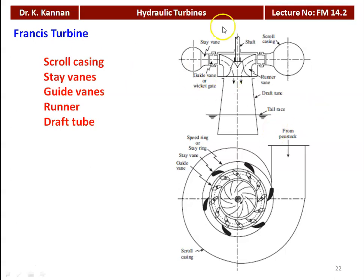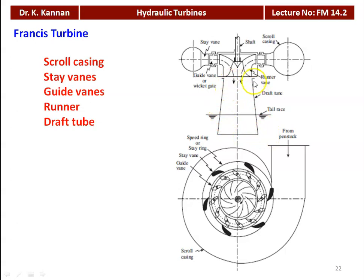The runner blades are made by stainless steel. Then we have the draft tube. After producing power, the water leaves the runner and flows through the draft tube. The cross section of the draft tube is constantly diverging. The water leaves the runner with higher kinetic energy, which is converted into pressure by means of the draft tube. The draft tube has a constantly enlarging cross-sectional area, which converts the velocity of the water into pressure.